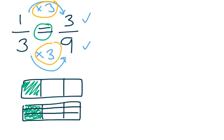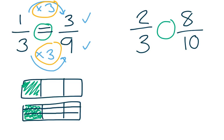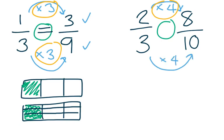Let's try one more before you go on to your next practice. Use your strategy to see if two thirds and eight tenths are equivalent to each other. Pause the video and press play when you're ready to check. Let's check with our numerator first. I'm getting from two to eight, so that's getting larger, so I know I need to multiply. Two times four is going to give me my numerator of eight. So whatever I did to the top, I need to do the same to the bottom. Three times four is 12, but my denominator says 10. So since multiplying times four at the top and bottom did not both work, that means my fractions are not equal.